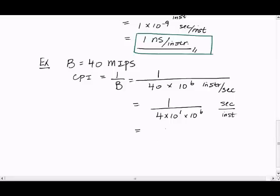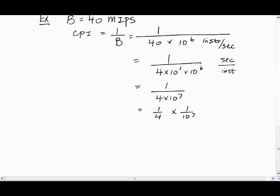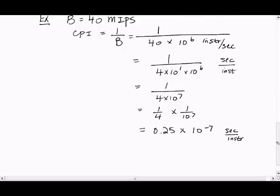So this is the same as 1 over 4 times 1 over 10 to the 7, which gives us 0.25 times 10 to the minus 7. Let's carry on our units. So rewriting this to be 25 times 10 to the minus 2 times 10 to the minus 7.